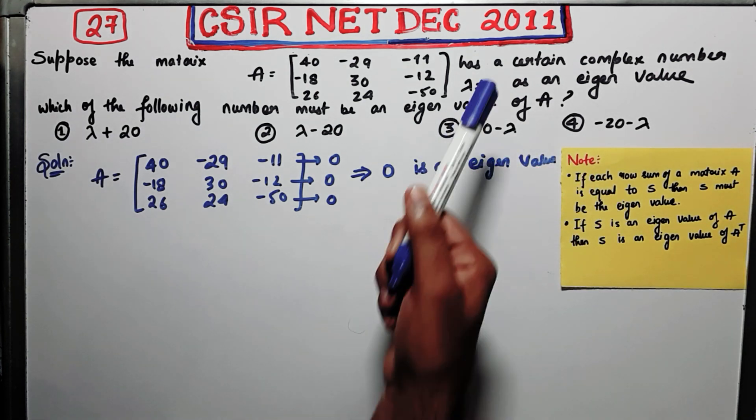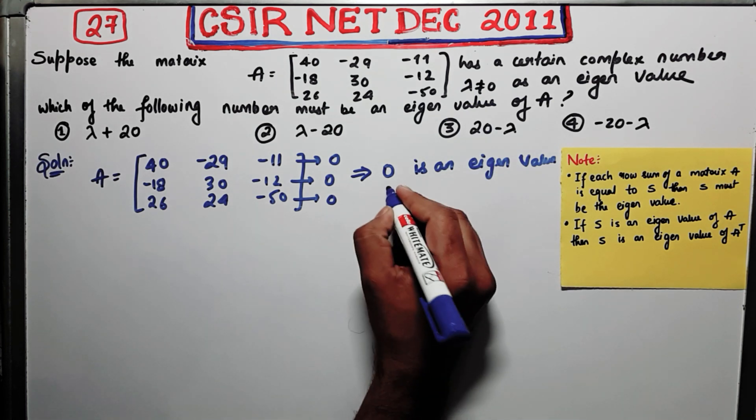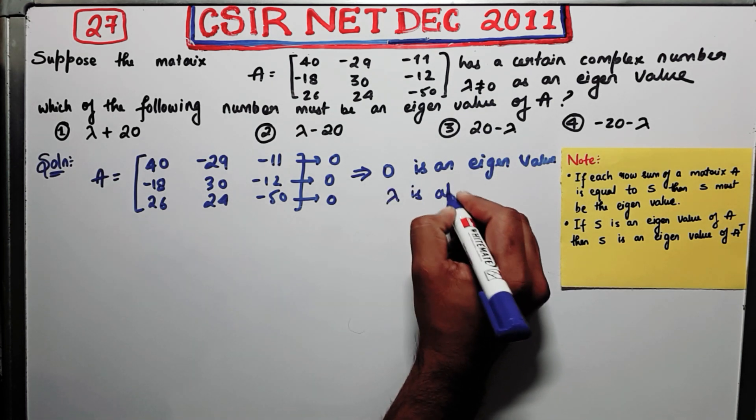Now what is given to you already, that lambda is a number which is eigenvalue. Lambda is also eigenvalue. This is what you know.